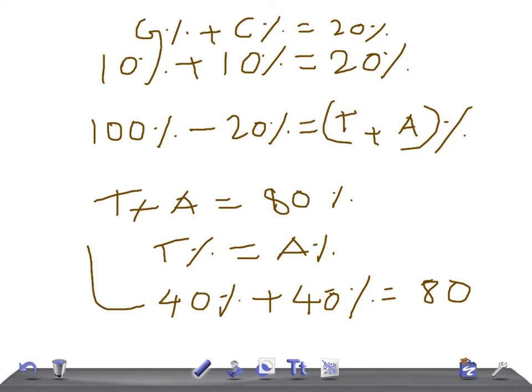So T should be 40% or A should be 40%, that's it. So did you get me, what's Chargaff's rule? Chargaff's rule: according to Chargaff's rule, the percentage of the purines equals the percentage of pyrimidines.